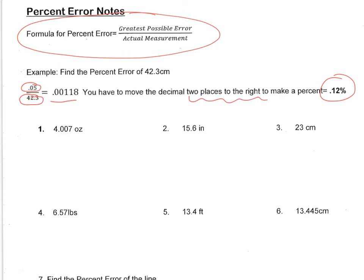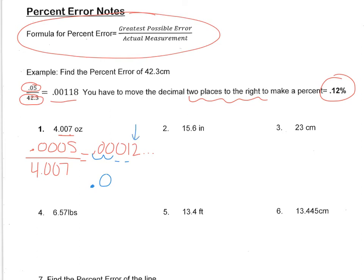First of all, we have three numbers after the decimal point, so the greatest possible error is 0.0005. And we're going to divide that by the actual measurement, which was 4.007. So in your calculator, you're going to do 0.0005 divided by 4.007. And when you do that, your calculator is going to show 0.00012, and it keeps going. So what we need to do then is move the decimal two places to the right to get the percentage. So our percentage is 0.01%, because this 2 tells us to keep the 1 the same. So it's 0.01% is the percent error.